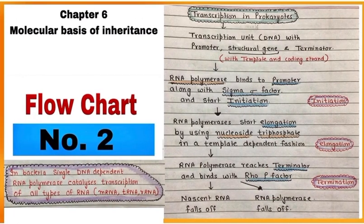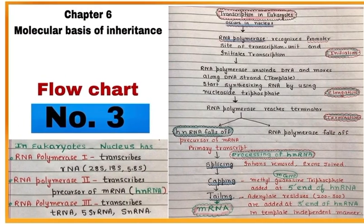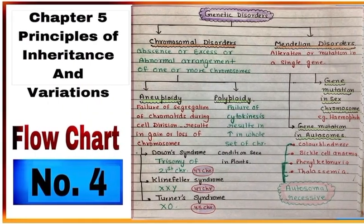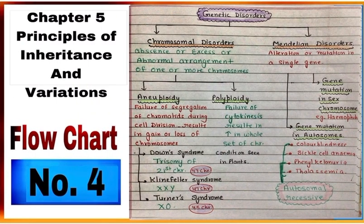Flowchart number three is showing the process of transcription in eukaryotes. Flowchart number four is from the chapter Principles of Inheritance and Variations — it is showing various genetic disorders.